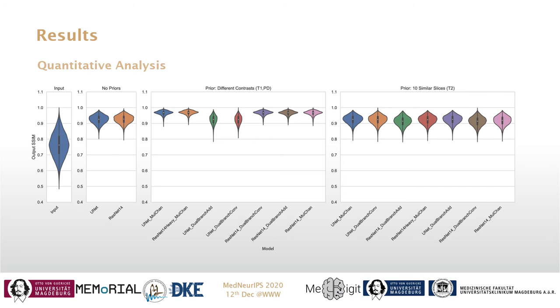However, for UNet, only the multi-channel version has shown any improvement over the baselines, and the dual-branch versions did not show any improvement.